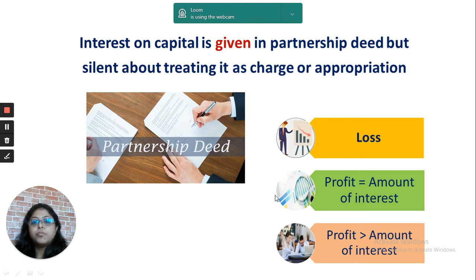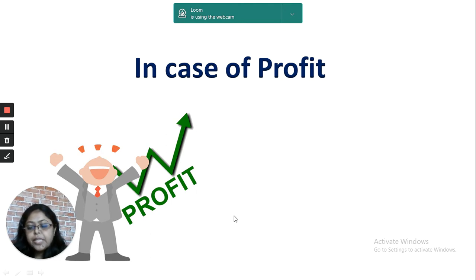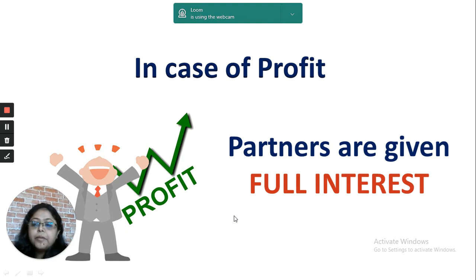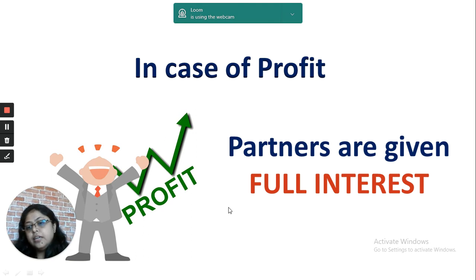If interest on capital is taken as appropriation, there can be three situations: what to do in case of loss, when profit equals the interest amount, and when profit is more than the interest amount. When there is sufficient profit, the complete amount of interest will be given. For example, if partner A is to get 2000 and partner B is to get 3000, and the profit is 10,000, then out of 10,000 they can easily pay 2000 and 3000 to both partners in full.